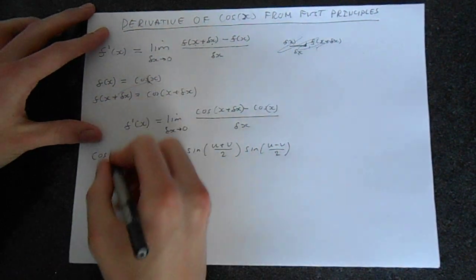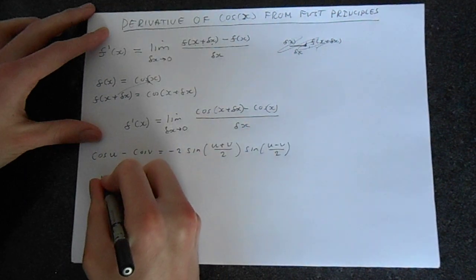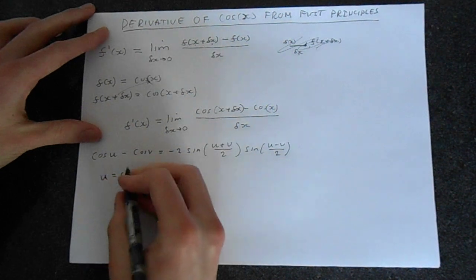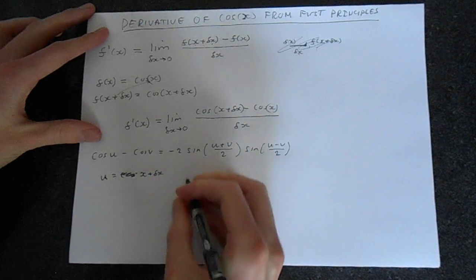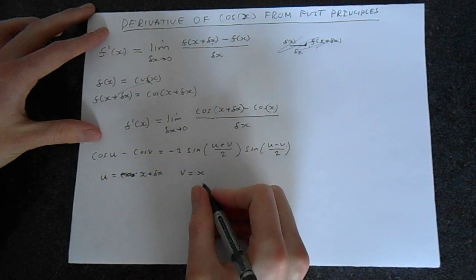So in this case, we can compare this with our expression here. So we could say that we'll let u equal x plus delta x, and v will equal x.